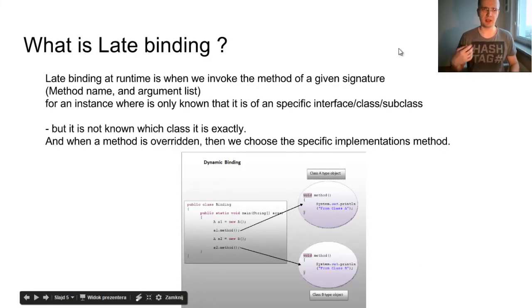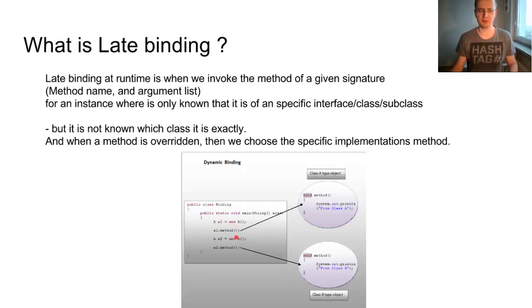What is late binding? Let's have an example here. We have class A and class B which inherits from class A, and both classes have methods defined. In class B the method is overridden. The problem here is that the compiler doesn't know which method from class A or from class B will be invoked here, because it looks only on the reference type. So only at the time of runtime he will know which method to invoke. This is why we call it late binding.